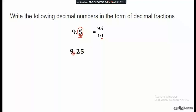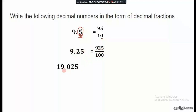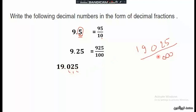Nine point twenty-five: we have two decimal digits so two zeros — over hundred — giving nine hundred twenty-five over hundred. Next, nineteen point zero twenty-five: we write the number without the decimal point in the numerator, and we have three decimal digits so three zeros — over one thousand.